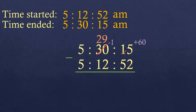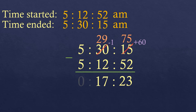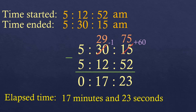And this 15 plus 60 is 75. Now we can subtract: 75 minus 52 is 23. Then 29 minus 12 is 17, and 5 minus 5 is 0. So the elapsed time is 17 minutes and 23 seconds.